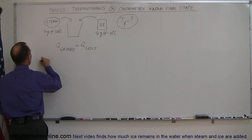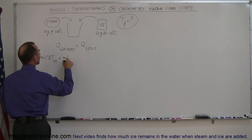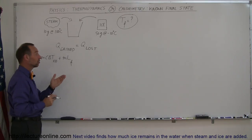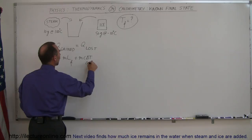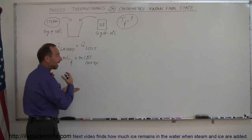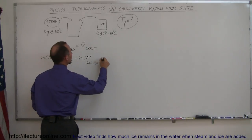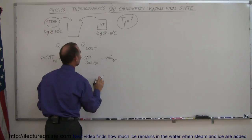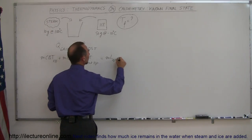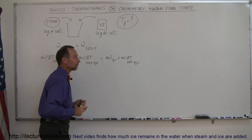Let's write down those terms. On the left: mc·ΔT of the ice going from minus 10 to 0, plus m times the latent heat of fusion as the ice melts, plus mc·ΔT of the cold water as it heats up to the final temperature. On the right: m times the latent heat of vaporization as the steam condenses into water, plus mc·ΔT of the hot water.